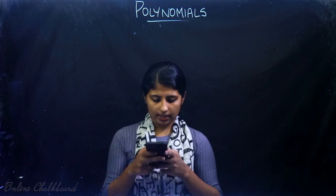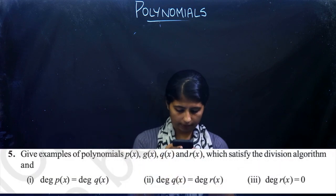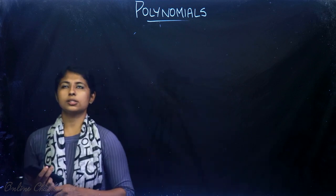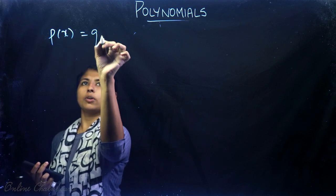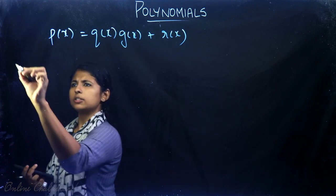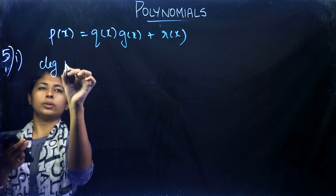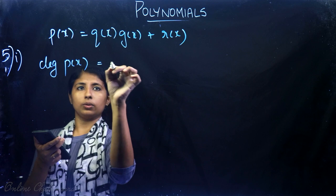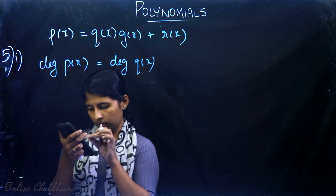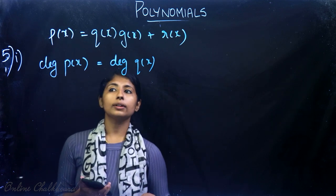Let's do Exercise 2.3, Question 5: give examples of polynomials P(x), G(x), Q(x), and R(x) satisfying the division algorithm. The first part asks for an example where degree of P(x) equals degree of Q(x). From P(x) = G(x)·Q(x) + R(x), the degrees will be equal only when G(x) is a constant (degree 0), so that dividing does not reduce the degree.